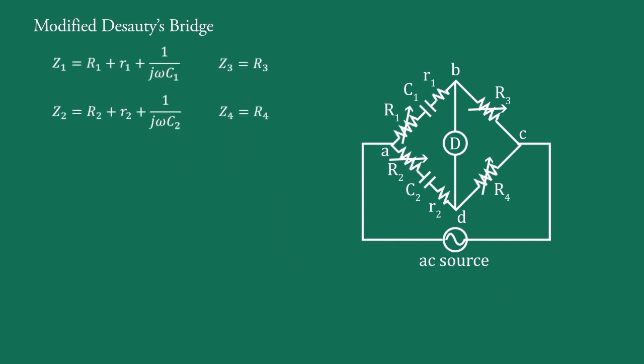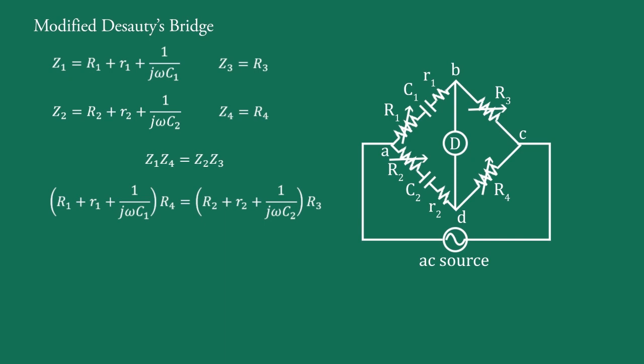Applying the bridge balance condition, we have (R1 + r1 + 1/jωC1) · R4 equal to (R2 + r2 + 1/jωC2) · R3. Expanding the brackets, we can write (R1 + r1) · R4 + R4/jωC1 equal to (R2 + r2) · R3 + R3/jωC2.